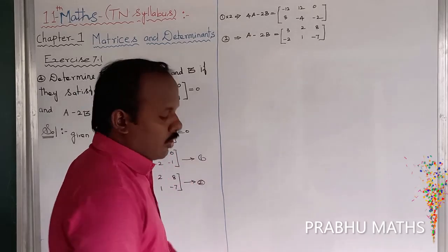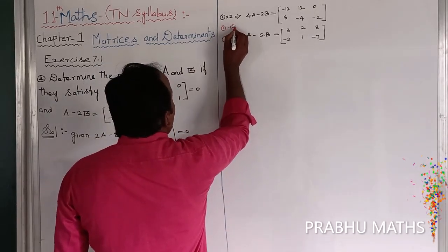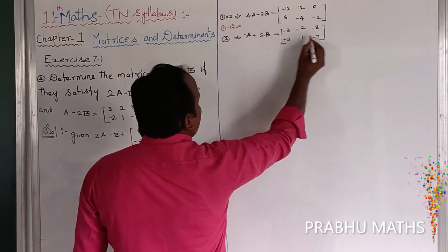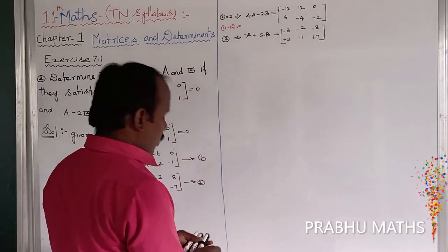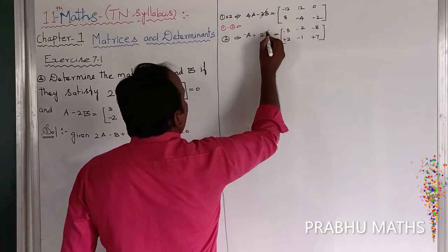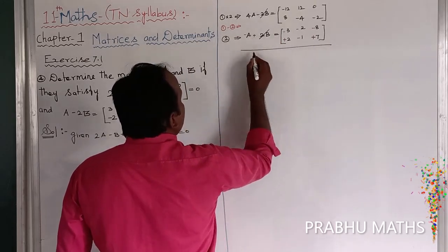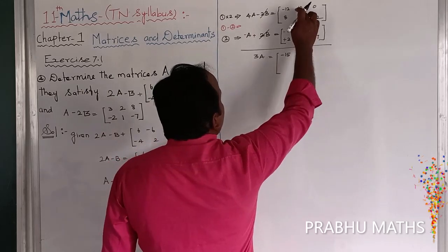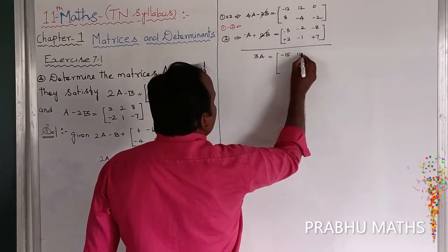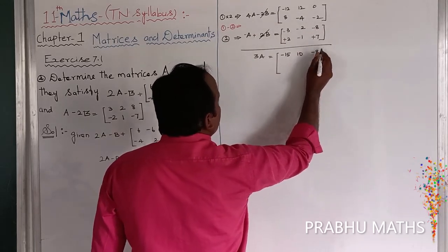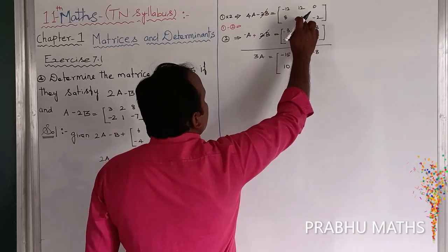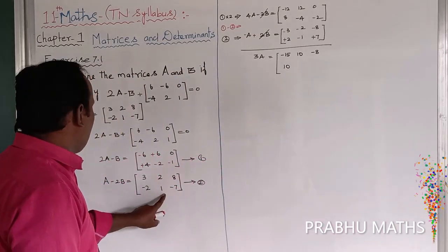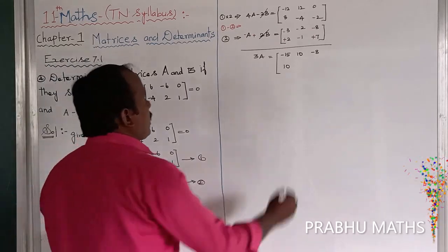Equation 1 minus equation 2. The 2B terms cancel. The remaining value: 4A minus A is equal to 3A. So 3A is equal to: minus 15, next 12, this one minus 2 equal to 10, 0 minus 8 equal to minus 8, next 8 plus 2 is 10, next minus 4 minus 1 equal to minus 5, and this one equal to 5.